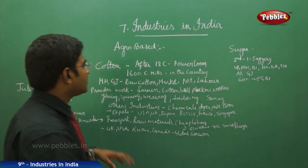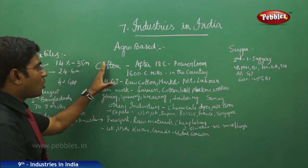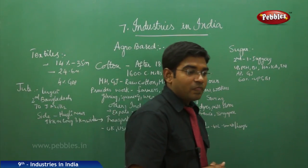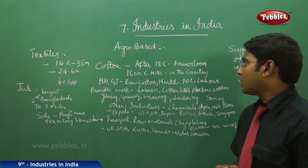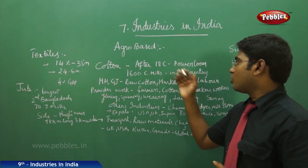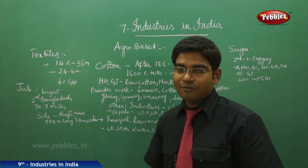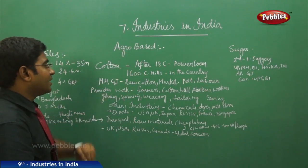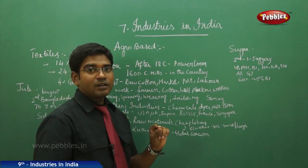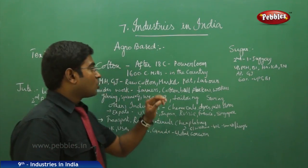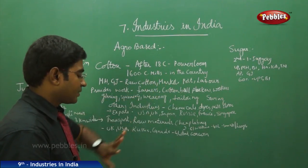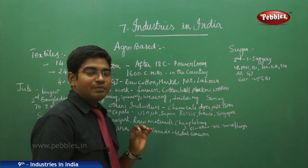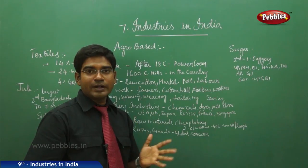Moving on to the cotton industry specifically — after the 18th century, power looms entered India following the Industrial Revolution, and during that period we had nearly 1,600 cotton mills in the country. These are mostly located in the states of Maharashtra and Gujarat.